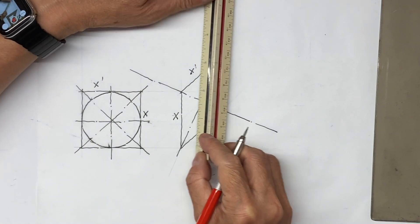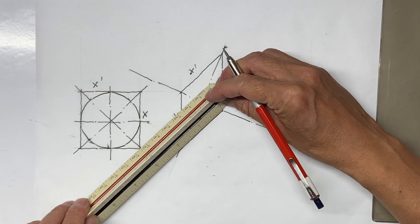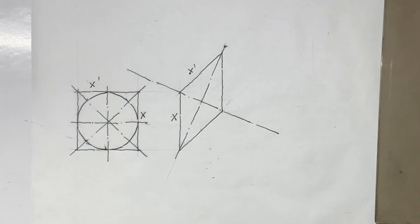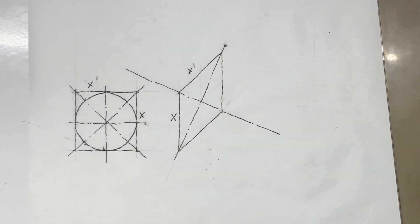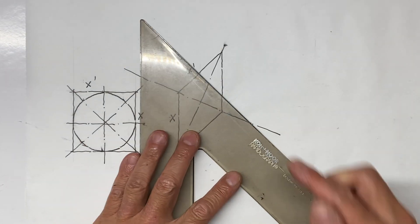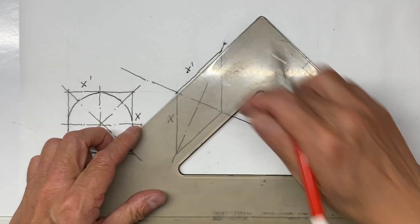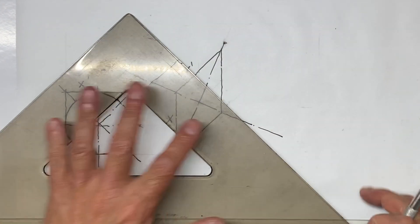The four-center method of drawing an ellipse uses two sets of radii and a compass or a circle template.